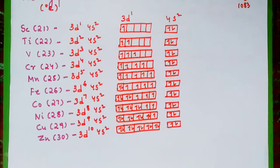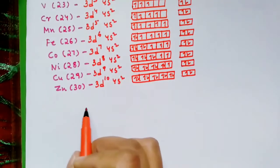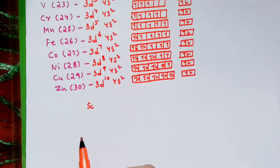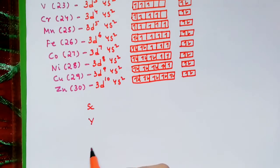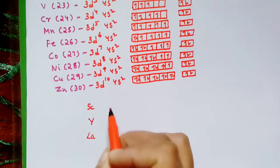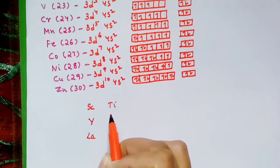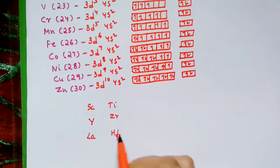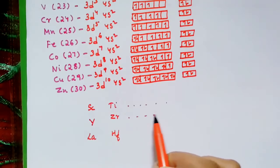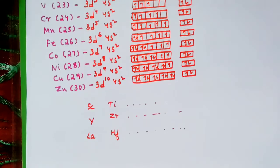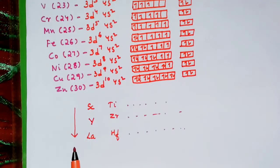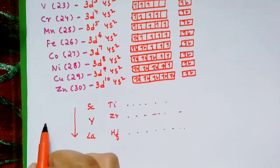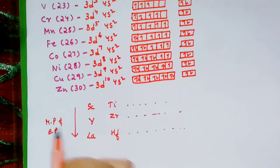What if we move down the group? In the 3D series we have scandium, in the 4D series we have yttrium, then lanthanum. Below titanium we have zirconium, then hafnium, and so on — check from the periodic table. Moving down the group, the boiling point and melting point will increase, because there will be a maximum number of unpaired electrons.